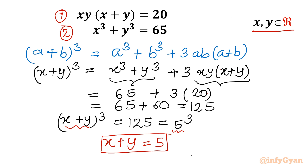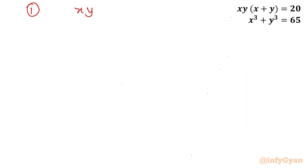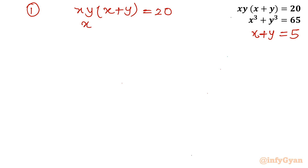Let us call this equation number 3. Now I will substitute equation 3 into equation 1: xy·(x + y) = 20, and x + y = 5. So xy × 5 = 20. Dividing both sides by 5, we get xy = 4.